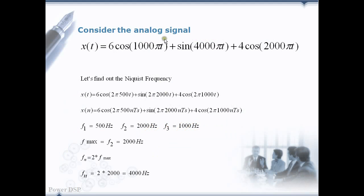The analog signal is given here. We are going to sample this signal with the Nyquist rate. For that we need to first find out the maximum frequency component in the signal. Here there are three frequency components and the maximum frequency component is two kilohertz. So the Nyquist rate is two times f max that is equal to four kilohertz.